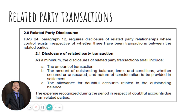What is related party disclosure? PAS 24, paragraph 12, requires disclosure of related party relationships where control exists, irrespective of whether there have been transactions between the related parties. Related party disclosure is important because since these parties are related, there might be conflicting interests between the two parties, and thus it is required to be disclosed to the shareholders or any other stakeholders of the entity.